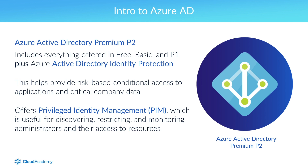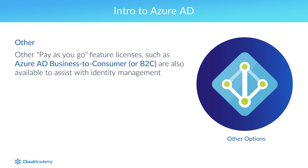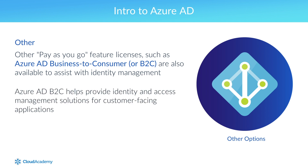Privileged identity management also provides just-in-time access when it's needed, meaning access to resources can be limited to only those times when it's required, and then be taken away automatically when the access is no longer needed. Other pay-as-you-go feature licenses, such as Azure AD Business to Consumer, or Azure AD B2C, are also available to assist with identity management, helping provide identity and access management solutions for customer-facing applications.